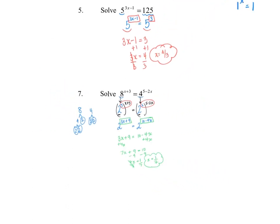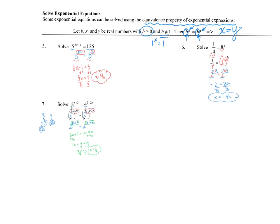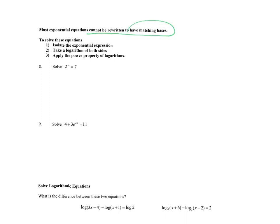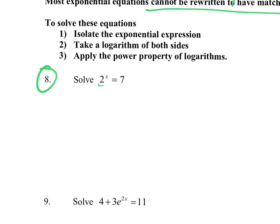For those past three questions, we were able to make the bases match each other, so we were able to use the equivalence property. But what if you can't write them as having matching bases? Let's take a look at number eight. Number eight says we have two to the x equals seven, and two and seven are prime, so there's no way we can make those bases match. But because those two quantities are equal, the natural log of those two quantities also has to be equal to each other, because log functions are one-to-one — if these things are equal, then the natural log of those inputs is also going to have to be equal.